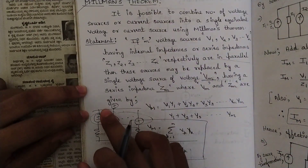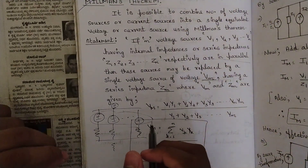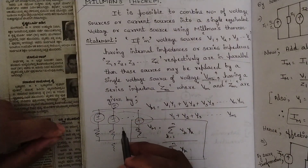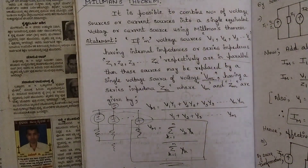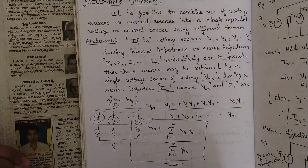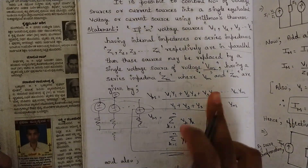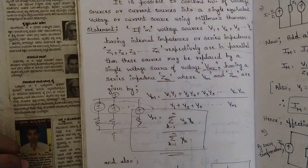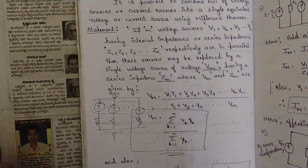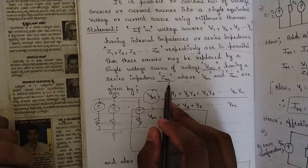All of them would come into one single parallel path. You can add all the currents into one single current source, convert all the parallel resistors to a single equivalent resistance, then convert that back to a voltage source with series resistance using source transformation. That's correct, but if you solve that way you won't get any marks since the question specifies Millman's theorem. So you must use the dedicated formula, plug in the values, and finish.